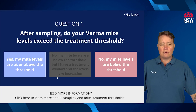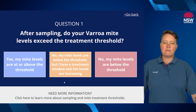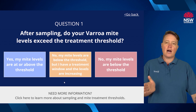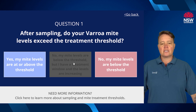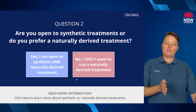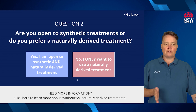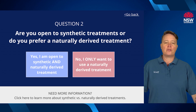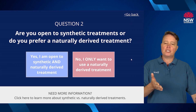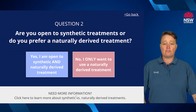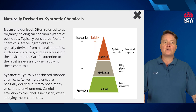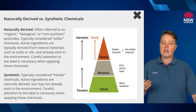The first question also has an option aimed more at commercial beekeepers where mite levels are below threshold but they have a treatment window and know their mite levels are going to increase. Selecting that option takes them through to the same question about whether they want to use synthetic and naturally derived treatments, or only naturally derived. If you need more information about synthetic versus naturally derived treatments, you can click a link that takes you to an information page explaining the difference between naturally derived and synthetic chemicals.